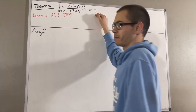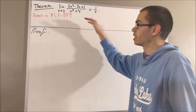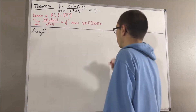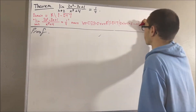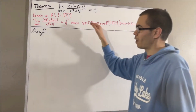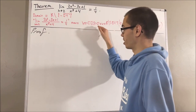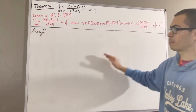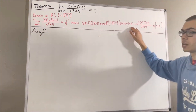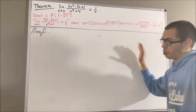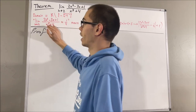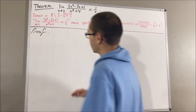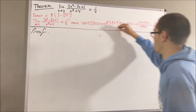So, what does this limit mean? Well, by the epsilon-delta definition of a limit, this means the following. It means for every epsilon greater than 0, there exists a delta greater than 0, such that for all x in the domain of our function, if 0 is less than the absolute value of x minus 2, which is less than delta, then the absolute value of 2x squared minus 3x plus 1 over x cubed plus 4 minus 1 fourth is less than epsilon. So really, to prove this limit, all we have to do is prove this statement.